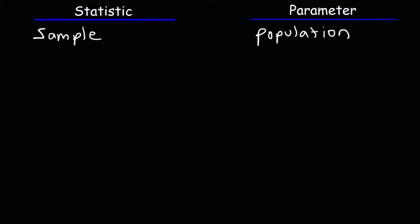Now, let's talk about some variables that highlight the differences between statistics and parameters. This symbol represents the sample mean — that would be a statistic because it describes the mean of the sample. The symbol mu is the mean of the population — that's a parameter, a characteristic of the population.